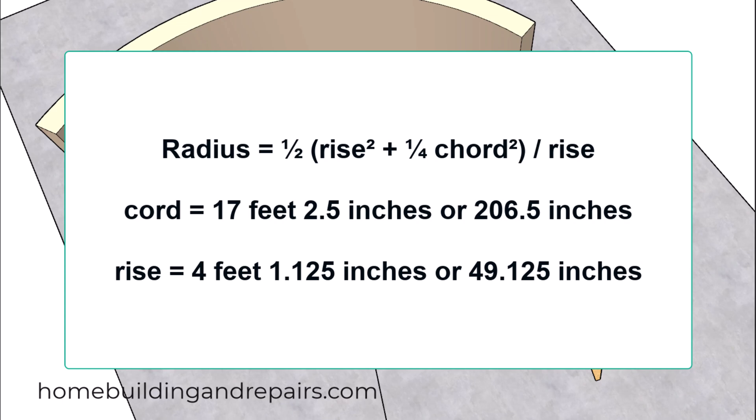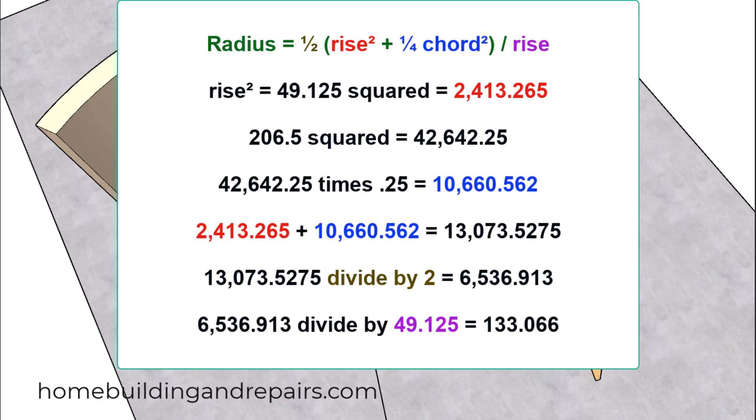If you remember, our chord length was 17 feet 2.5 inches. If we break that down into inches we're going to have 206.5 inches. Since you either need to use feet or inches to make your calculations, we're going to use inches in this video. So we're going to end up with a rise height of 49 and an eighth inches or 49.125 inches.